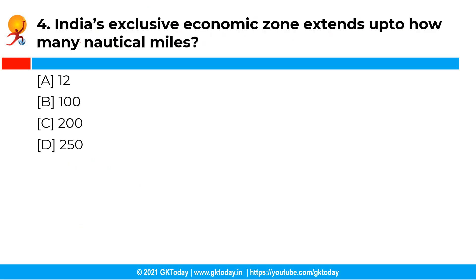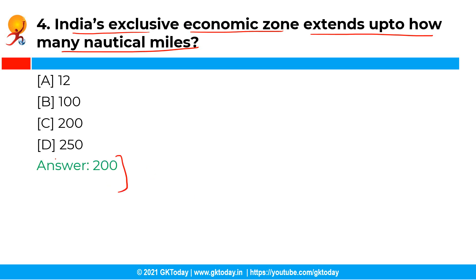The next question is: India's exclusive economic zone extends up to how many nautical miles? The correct answer is option C, that is 200. The territorial waters of India extend to a distance of about 12 nautical miles from the appropriate baseline. Similarly, India's exclusive economic zone extends up to 200 nautical miles.